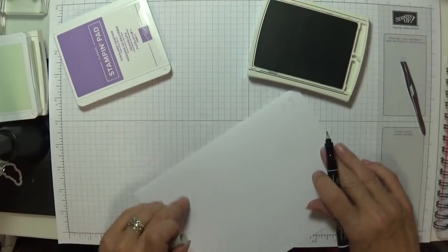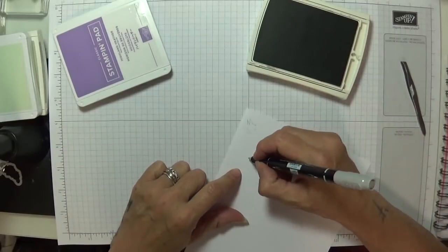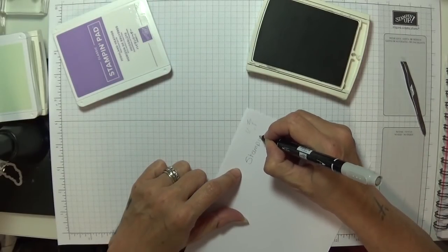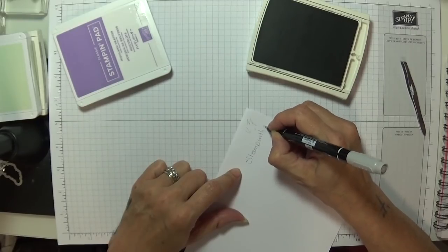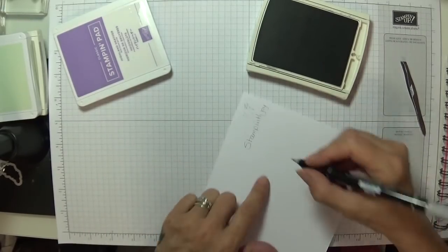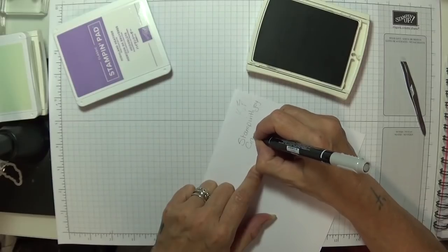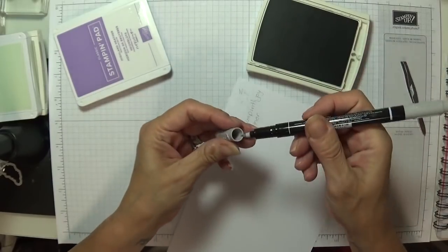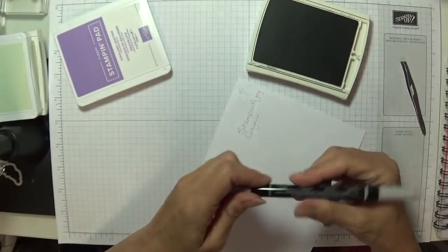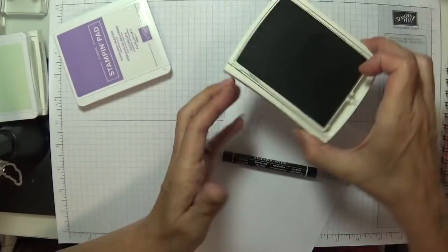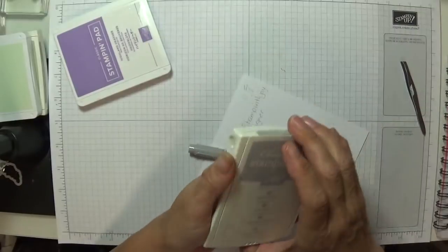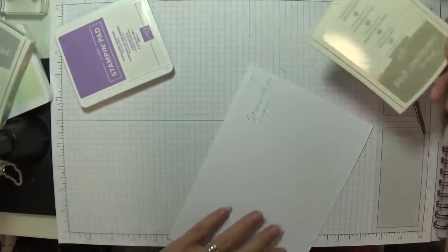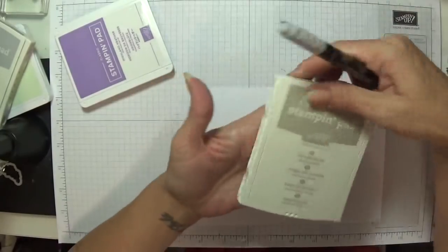Pop your nib back in and I'm just resting it so I can push it. I'm just going to give that a little wipe. And then you should have your pen working again like new. How's that? Don't go buying pens when you've got ink pads and re-inkers. There's the smoky slate. My Sahara sand is doing the same. I'm going to try that purple one again in a minute.